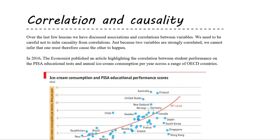The thing we need to be really careful about when talking about correlation is that we're not trying to infer any causation from it. Just because you have two variables that are strongly correlated, we can't necessarily say that one of the variables is causing the other to happen. For example, if we see a strong correlation between height and weight, we can't say that a change in weight causes the change in height.